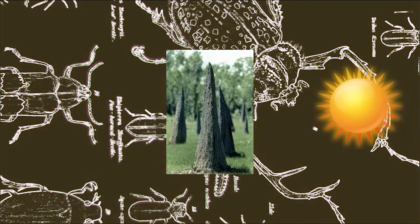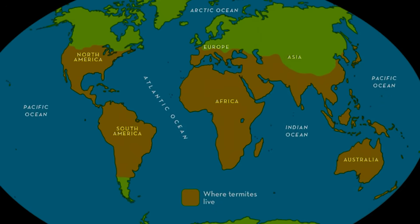And then at the time of day in which it's the coolest, the mound will be facing towards the sun. The majority of termite species are found in tropical and subtropical climates like parts of Africa, Southeast Asia, and Central and South America, and Northern Australia. These areas have the right amount of warmth and moisture for termites to thrive.